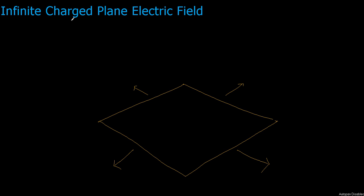Imagine here that we have this infinite plane expanding in all directions. It has a property called charge density, which we write sigma, and this is equal to the total charge divided by the total area. Both charge and area are infinite, but the charge density is a finite number. Let's imagine a point on the plane and take a vertical distance which we call h, and consider a charged particle Q at this point in space.